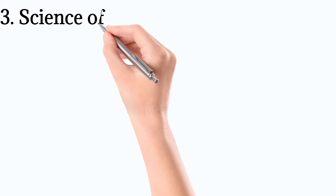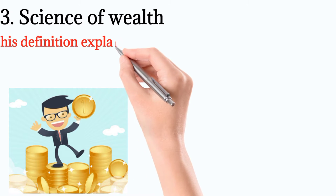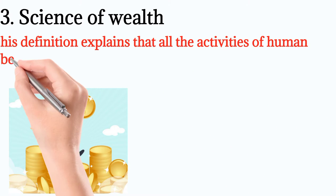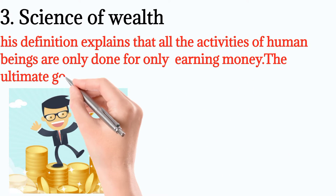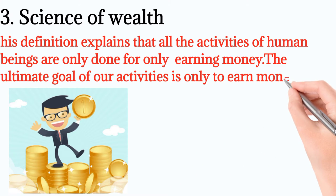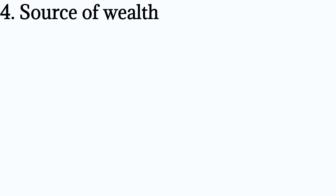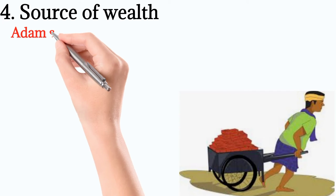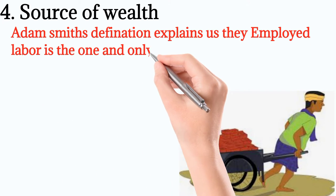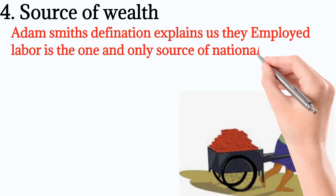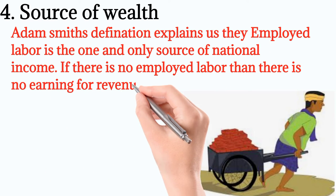Number 3: Science of wealth. His definition explains that all the activities of human beings are done only for earning money — the ultimate goal of our activities is only to earn money. Number 4: Source of wealth. Adam Smith's definition explains that employed labor is the one and only source of national income. If there is no employed labor, then there is no revenue for the nation.